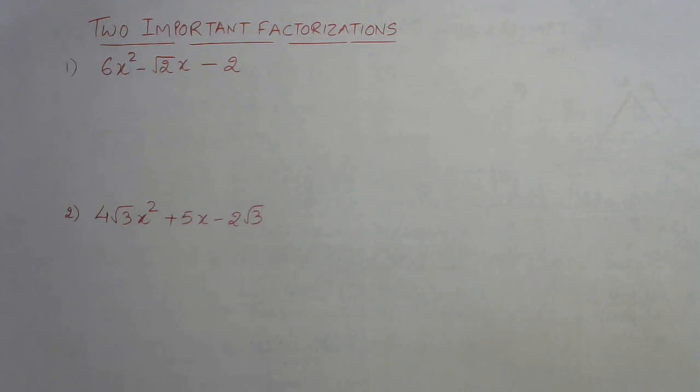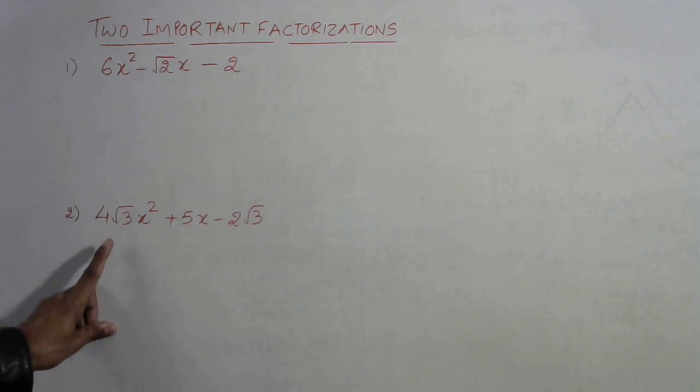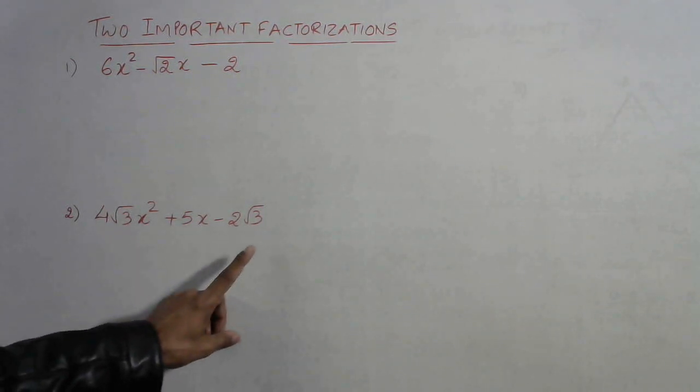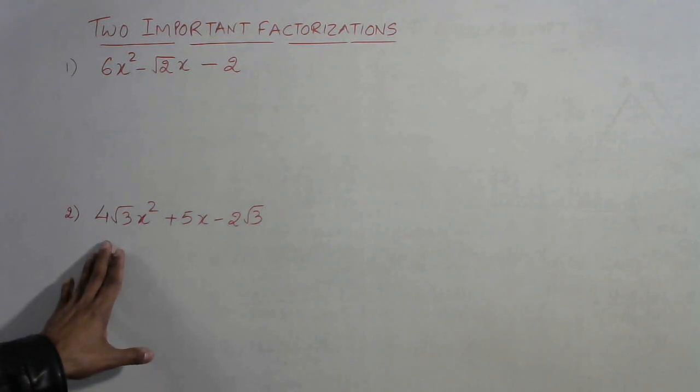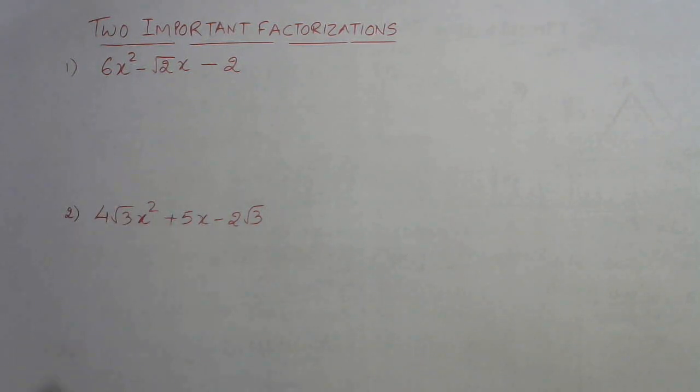When students learn factorization by splitting the middle term, they are not clearly told how to split the middle term of irrational middle term. This is root 2 in the coefficient of x. Likewise in this question we have square root of 3 and square root of 3 in the first term, that is coefficient of x square, and in the constant term. So how do we factorize these expressions or polynomials using method of splitting the middle term?